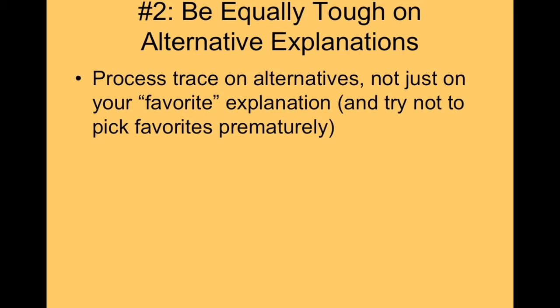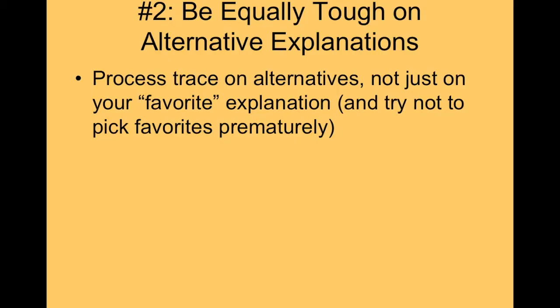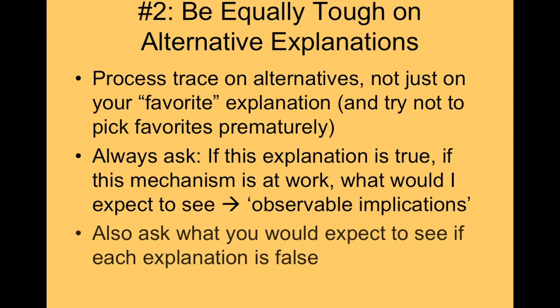Second, you want to be equally tough on the alternative explanations. A lot of times people put a lot of emphasis on their favorite explanation, look deeply for process tracing evidence, and eventually find something consistent with it. Then with the alternatives, they look very quickly and if they don't immediately find evidence, they dismiss them. You have to be fair — think not just what would be true if this explanation is true, but what would be true if it's false, and what would be true if another explanation is true. Do that systematically for each explanation.